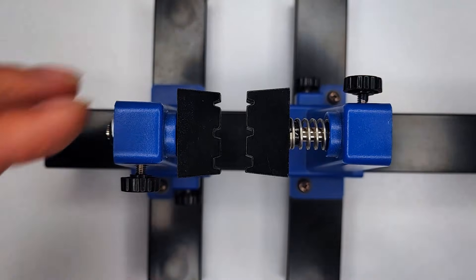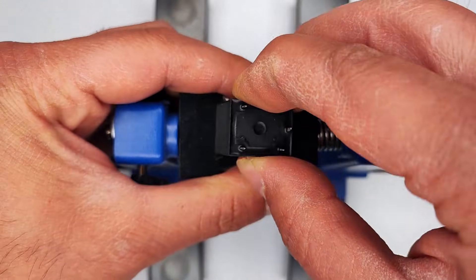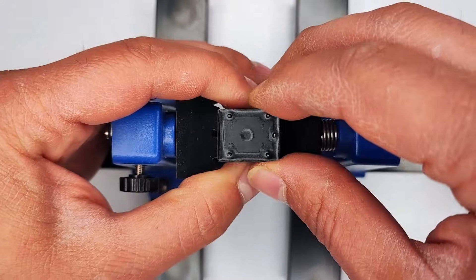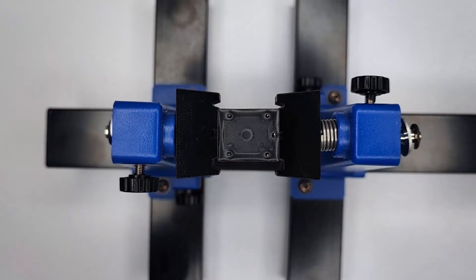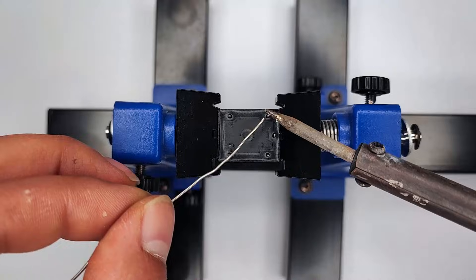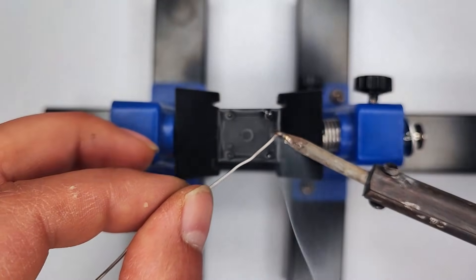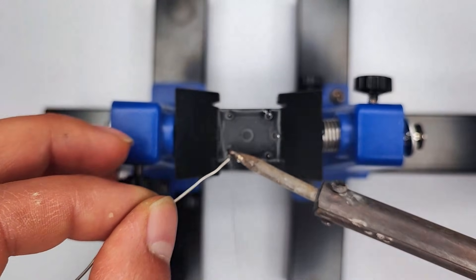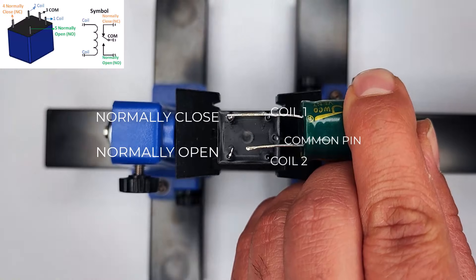This setup works because of the capacitor's charge and discharge timing, which controls how fast the relay switches. The timing follows the basic RC formula, T equals R times C. But in this case, the coil resistance of the relay becomes the R.